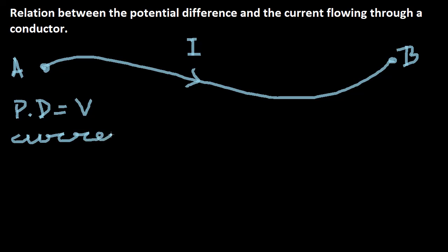Now, what actually is happening is electrons are flowing through this wire, and the rate of flow of these electrons is what we call electric current, as we have discussed earlier. You might have already experienced in your daily lives that if the potential difference goes up, the current also goes up. If the voltage goes up, things become much brighter, the fan moves faster, and the light shines more brightly — showing that the current through the conductors is greater.